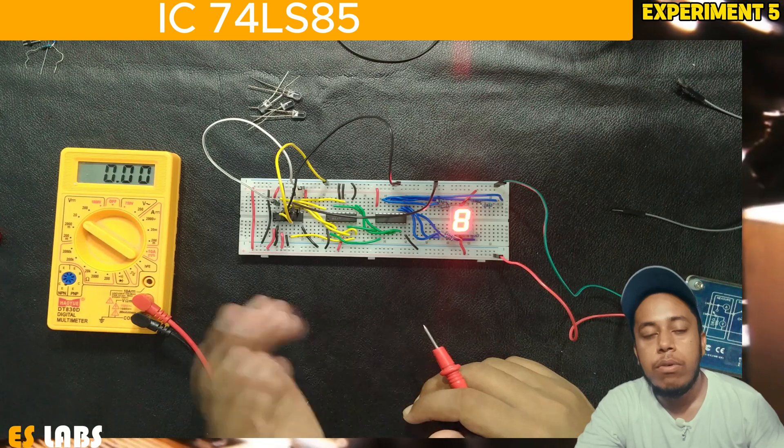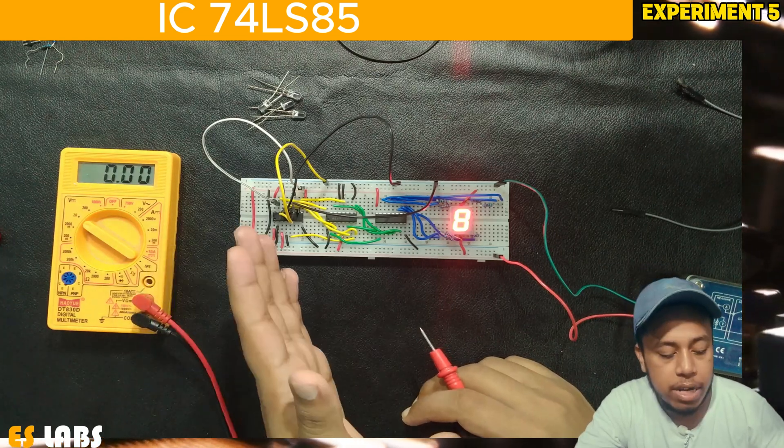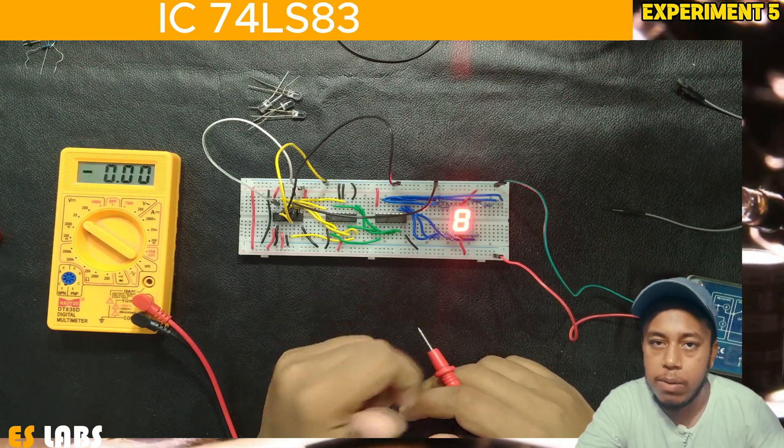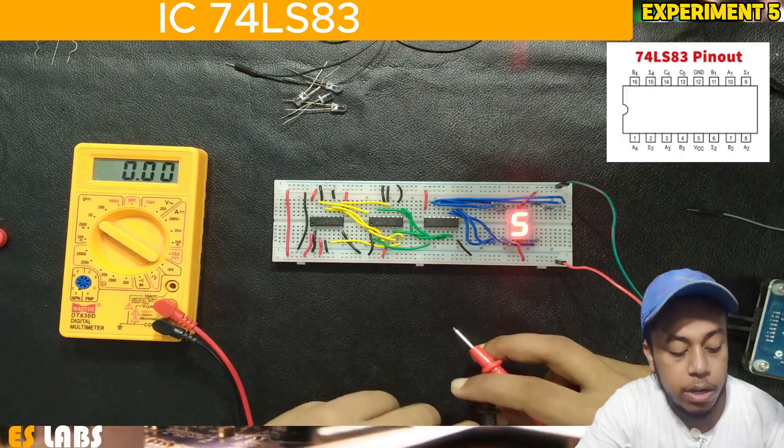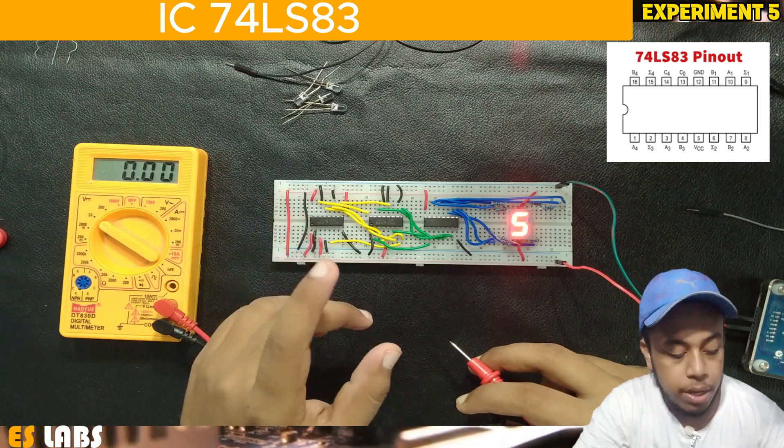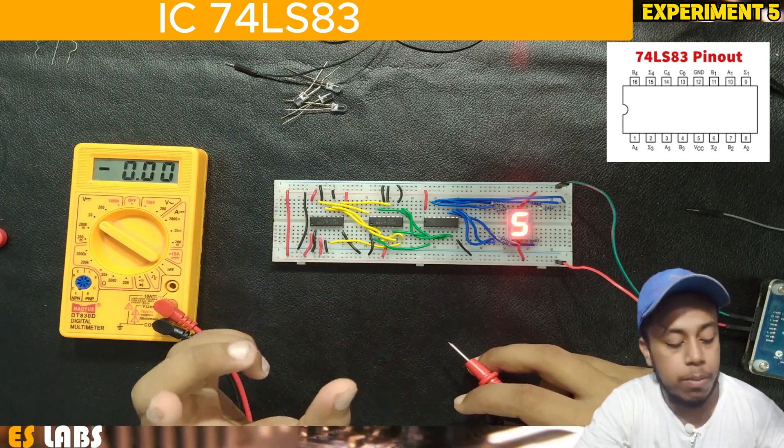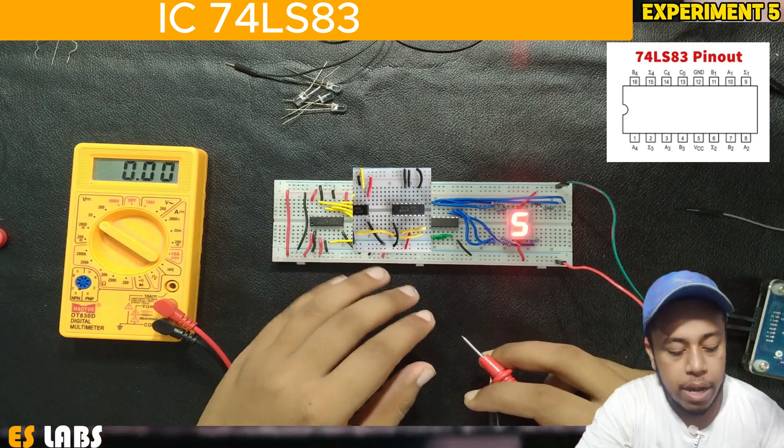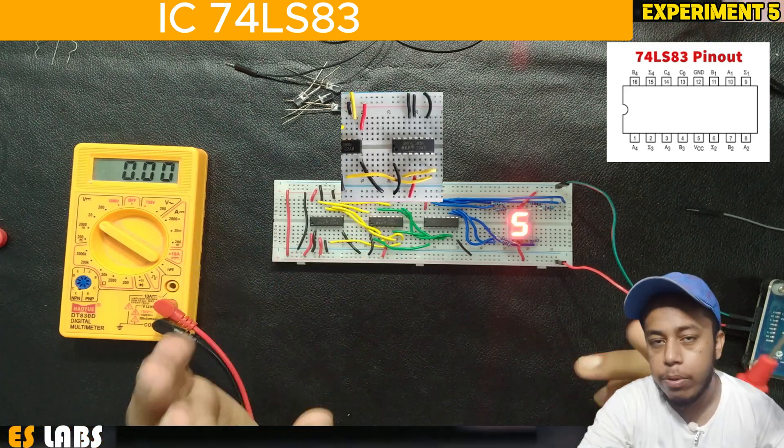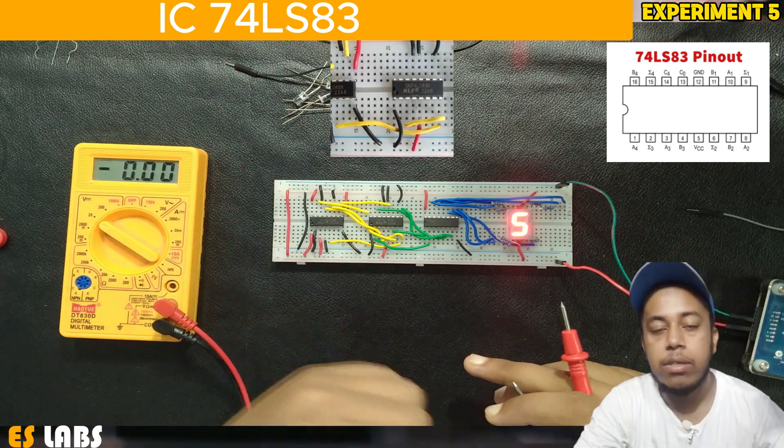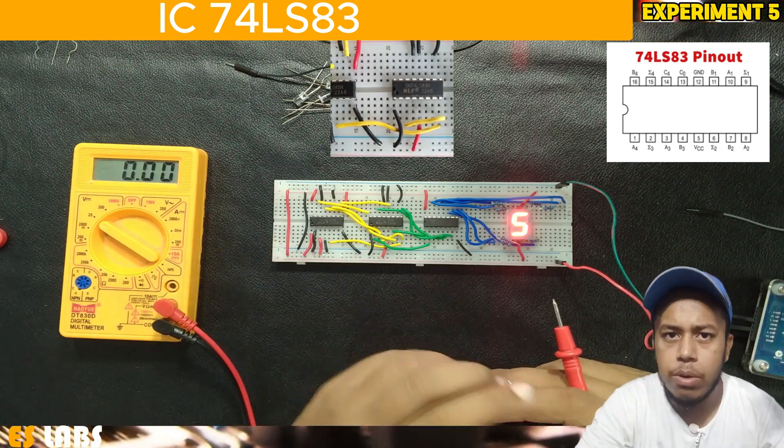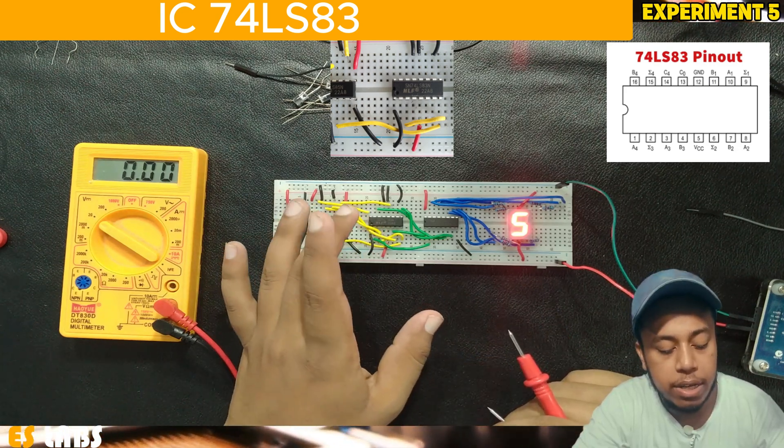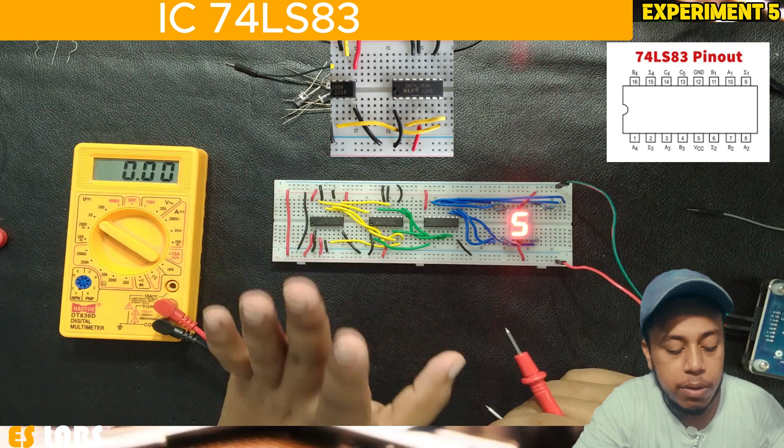Now we move to our next IC which is 74LS83. This is our binary adder. It also has 16 pins with two inputs from A4 to A1 and B4 to B1. This adder adds both inputs A and B and shows the output at summation 4, summation 3, summation 2 and summation 1. C4 is our carry out and C0 is our carry in, which should be connected to ground.